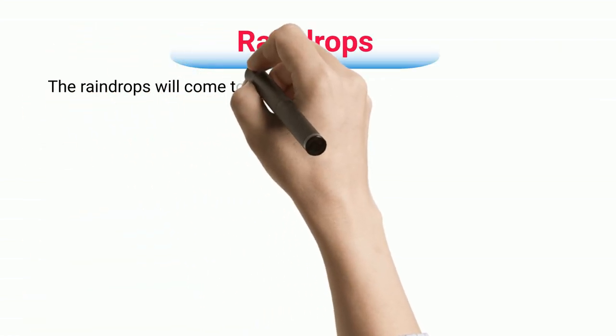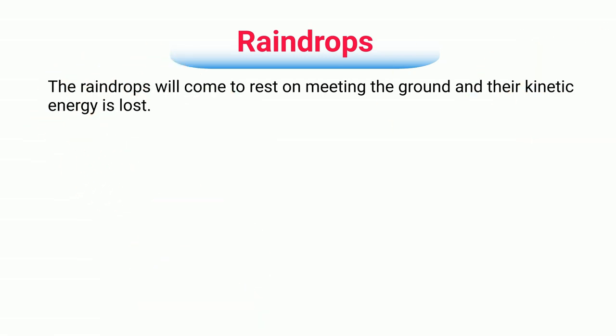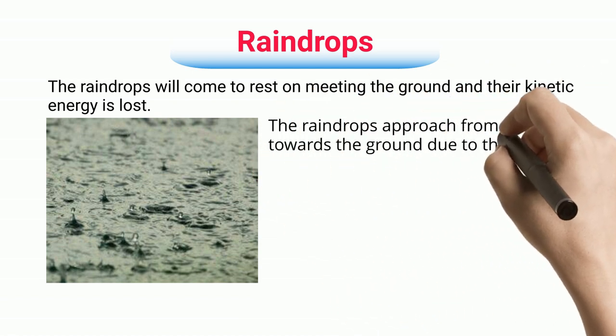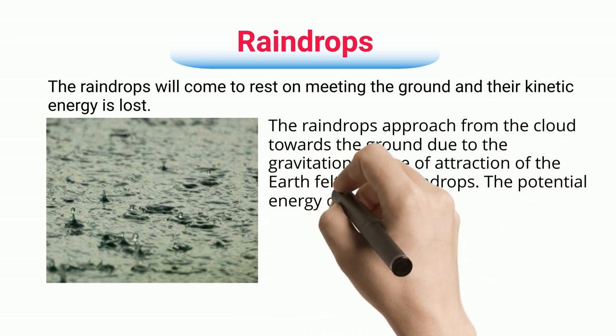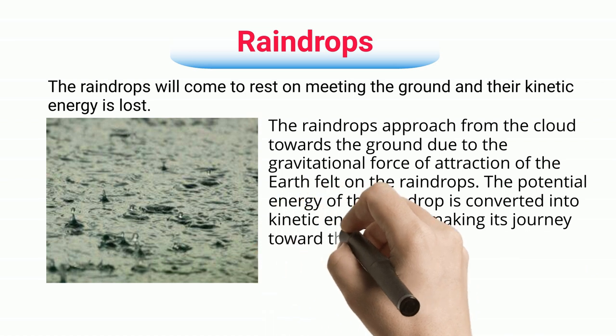Raindrops: The raindrops will come to rest on meeting the ground and their kinetic energy is lost. The raindrops approach from the cloud towards the ground due to the gravitational force of attraction of the earth felt on the raindrops. The potential energy of the raindrop is converted into kinetic energy while making its journey toward the ground.